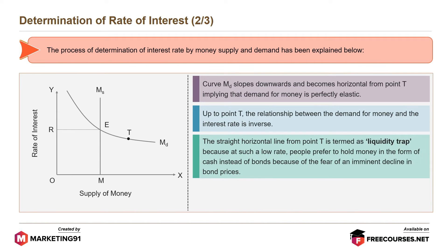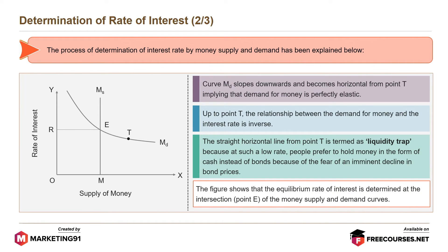The straight horizontal line from T is termed as liquidity trap, because at such a low rate, people prefer to hold money in the form of cash instead of bonds, due to the fear of an imminent decline in bond prices. The figure shows that the equilibrium rate of interest is determined at the intersection point E of the money supply and demand curves.